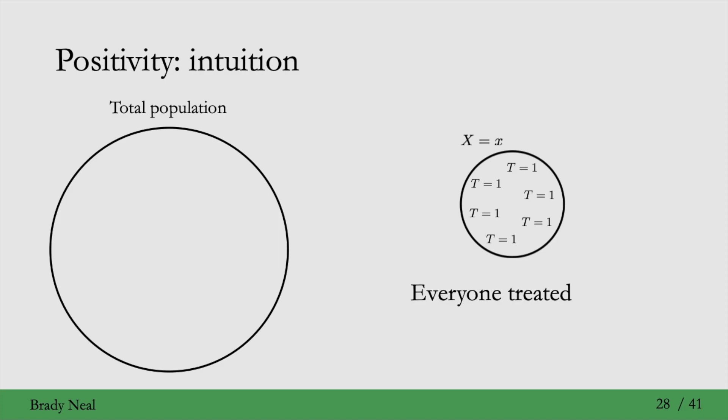Everyone was not given the treatment, so how can we talk about a causal effect in this subset of the population? Similarly, if everyone were given the treatment, how would we know what it would be like if they didn't receive the treatment? So we wouldn't really be able to talk about the causal effect there. That's the intuition for why the positivity assumption is important.